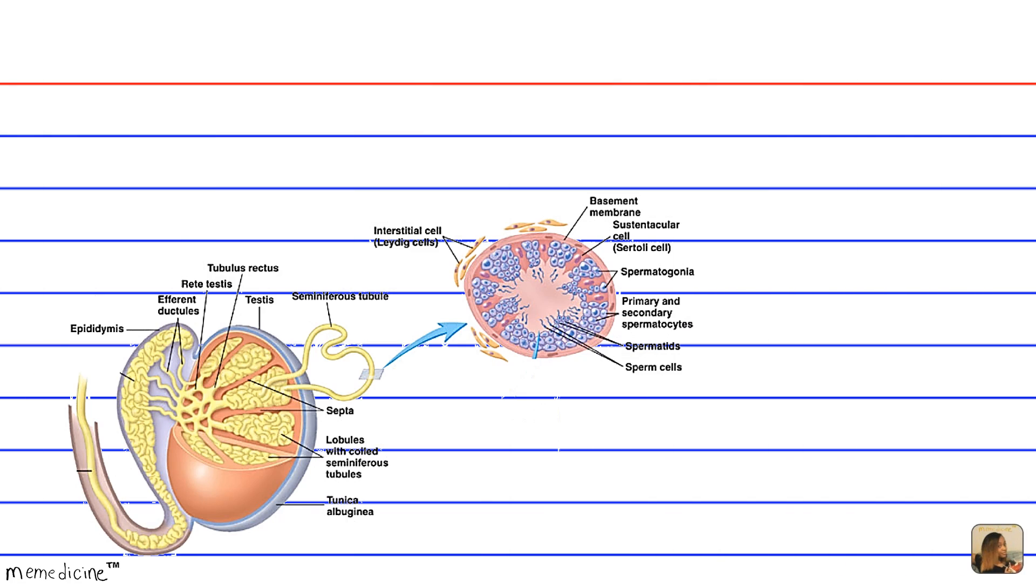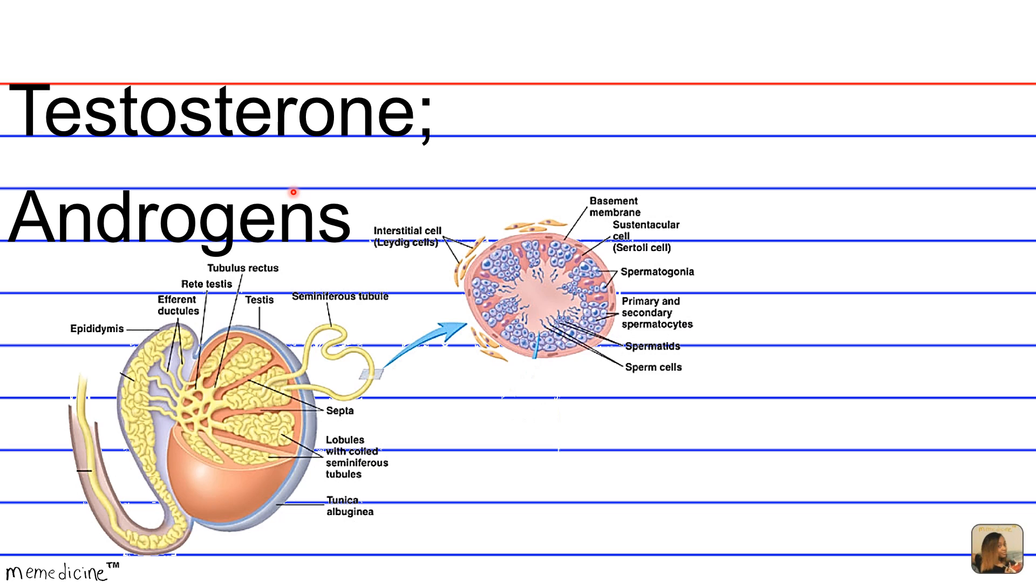So basically, the walls of the male gonad secrete testosterone and androgens, other sex hormones.